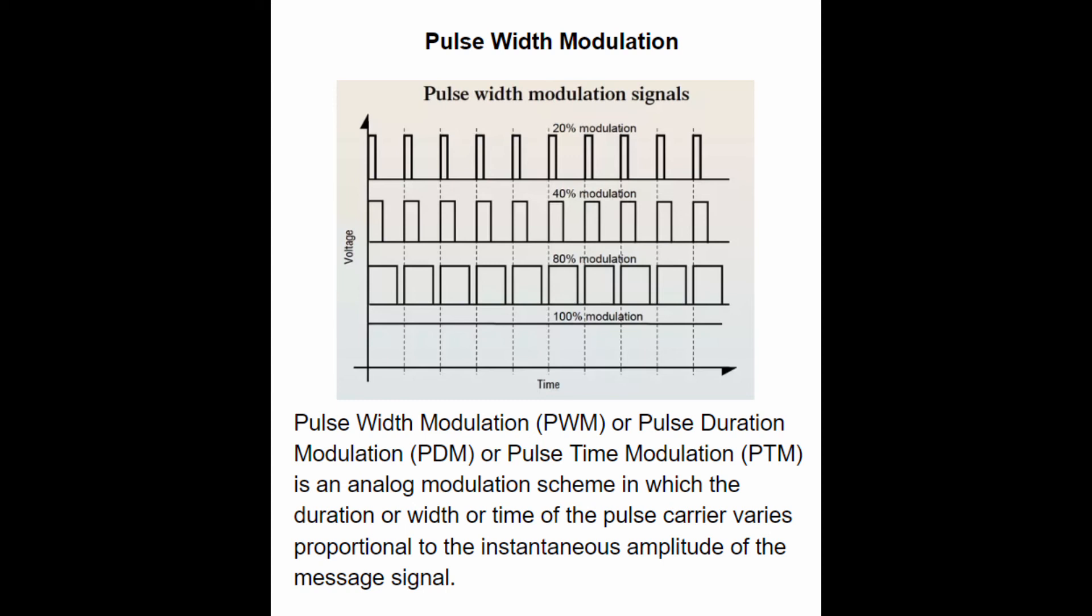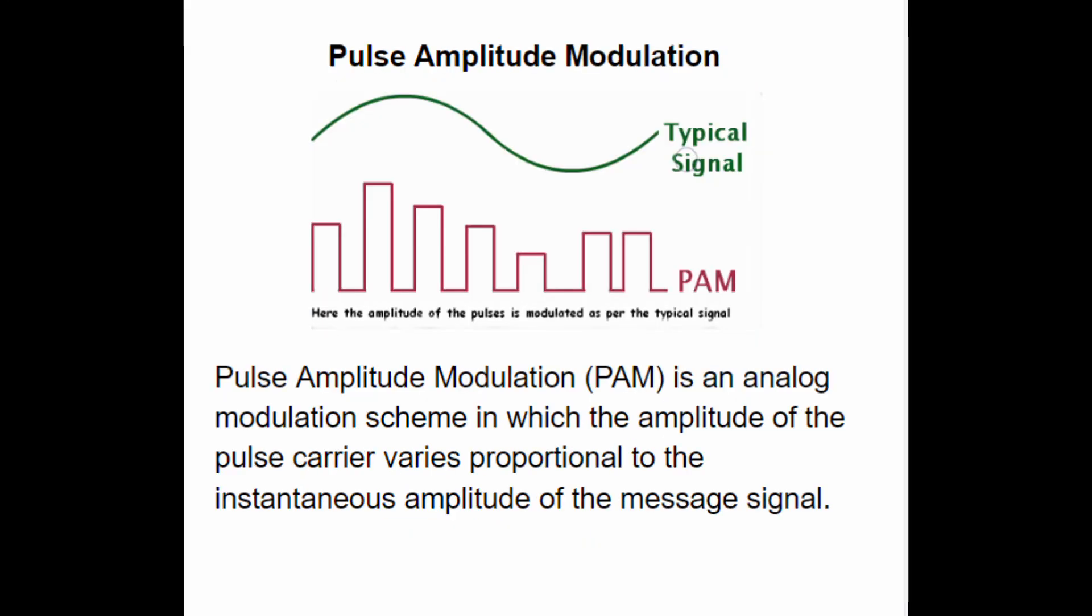Pulse Width Modulation, also known as Pulse Duration Modulation or Pulse Time Modulation, is an analog modulation scheme in which the duration or width or time of the pulse carrier varies proportional to the instantaneous amplitude of the message signal. Pulse Amplitude Modulation is an analog modulation scheme in which the amplitude of the pulse carrier varies proportional to the instantaneous amplitude of the message signal.